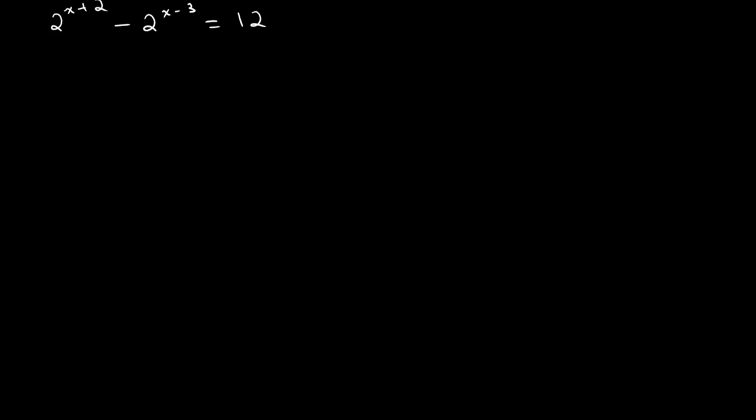Let's look at another example. Let's say that 2 to the power of x plus 2 minus 2 to the power of x minus 3 is equal to 12. Once again we want to express this in a form where we can take the log of both sides and be able to then solve for x. We know that we can't do it right away because of this minus sign which doesn't allow us to apply any of our rules.